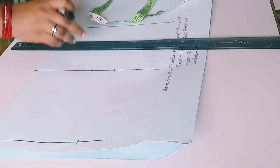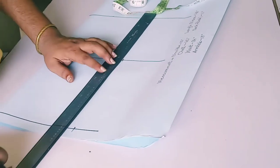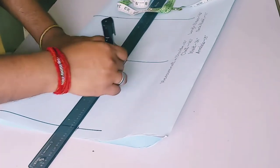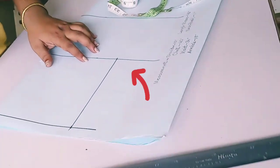Same thing you mark it on chest line also, 7 inch, to take the armhole curve. This is mark for armhole curve.